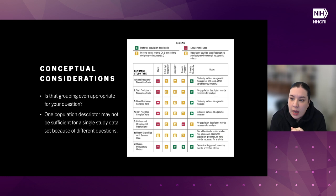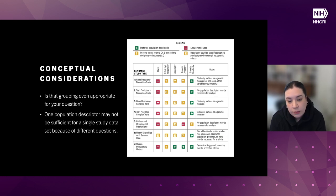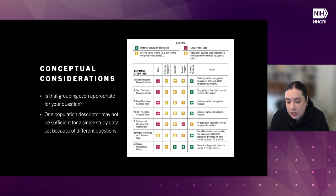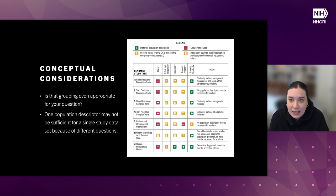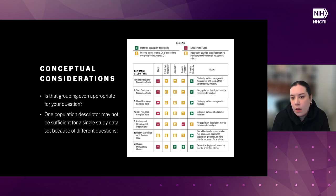You also have the preferred population descriptors. What's really important to note is that it depends on your question and what you're really trying to get at. For example, GWAS would fit into the gene discovery, complex traits category. What you're really trying to either control for or leverage is genetic similarity, because you want to account for allele frequencies or LD. Therefore, that's the descriptor that would be used. There are strong recommendations against the use of race because it is a social construct that's not valid for genetic differences, but there are other aspects that might be appropriate.